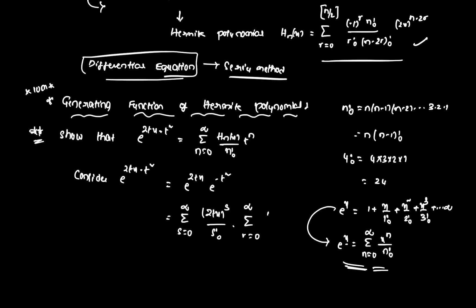So combining both summations, we get a double summation over s from 0 to infinity and r from 0 to infinity. In the combined term, the power of t is s plus 2r. Here we have (2x) to the power s in the numerator with s factorial and r factorial in the denominator, giving t to the power (s + 2r).